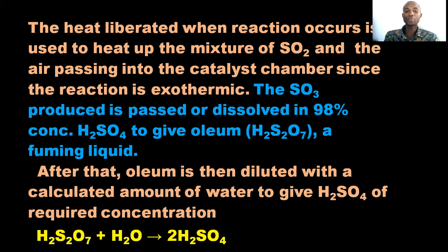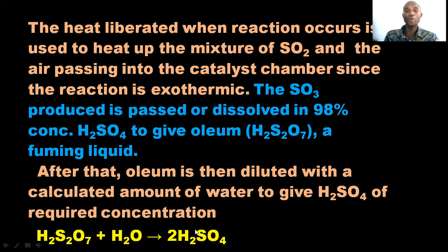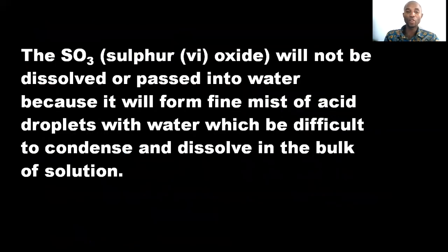The sulfur trioxide produced is dissolved in 98% concentrated H₂SO₄ to give oleum. This is the oleum. When this oleum is then diluted with a calculated amount of water, it gives tetraoxosulphate-VI acid. So when oleum is diluted, it produces tetraoxosulphate-VI acid. Note that sulfur trioxide cannot be dissolved directly into water because it would form a fine fume of acid droplets, which is difficult to condense and dissolve in the bulk of the solution.